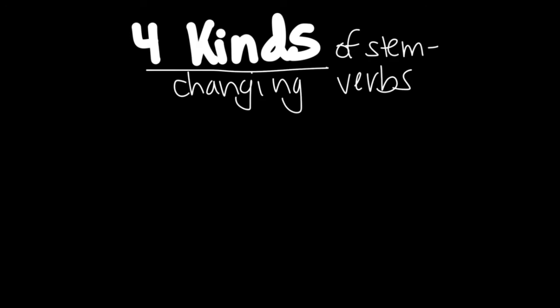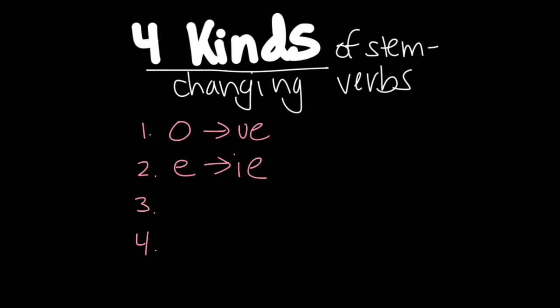We have four kinds of stem changes that can happen: O to UE, E to IE, E to I, and U to UE.